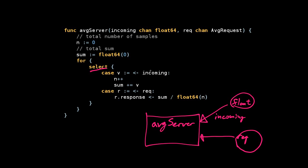If there's available data on incoming, then it will assign it to v, increment n, and add v to the sum. You can imagine it's calculating a running sum and the number of data elements it's seeing, so it can compute the average.